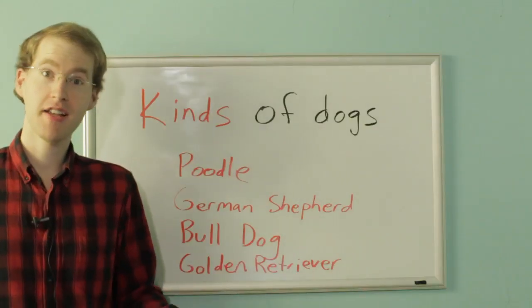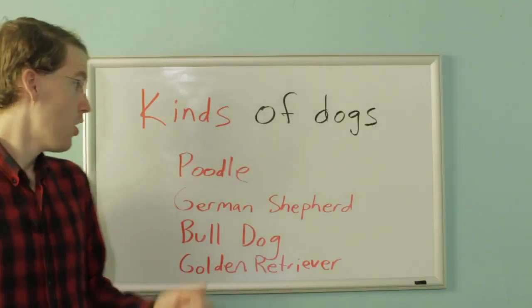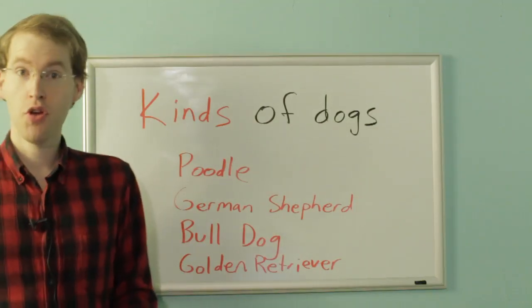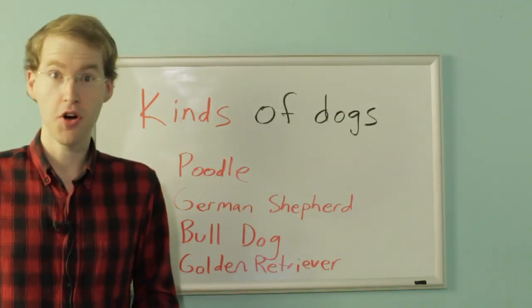There are different kinds of numbers just like there are different kinds of dogs. Poodles, German Shepherds, Bulldogs, Golden Retrievers. They're all different, but they're all still the same enough to all be dogs. Same thing with numbers.